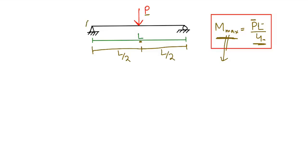Now if this is support condition A and this is support condition B, then half of the load will be taken by support A — it will be P/2 — and half of the load will be taken by support B — it will also be equal to P/2.